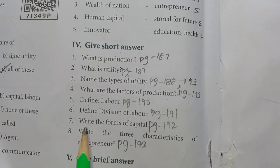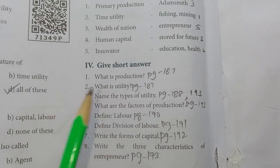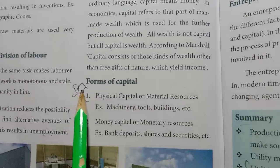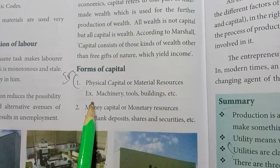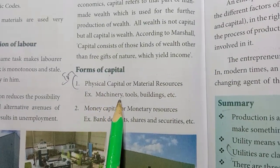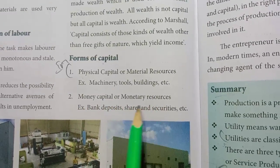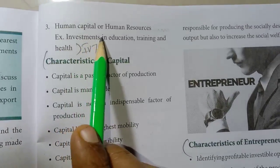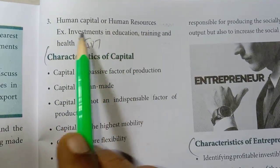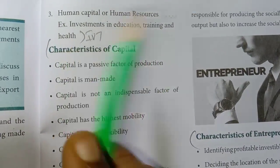Seventh one: Write the Forms of Capital. Page No. 192, under Forms of Capital — three points. Physical Capital or Material Resources, example: Machinery, Tools, Buildings. Money Capital or Monetary Resources, example: Bank Deposit, Shares and Securities. Human Capital or Human Resources, example: Investments in Education, Training and Health.